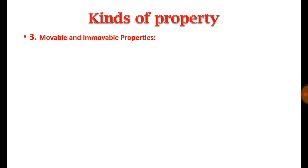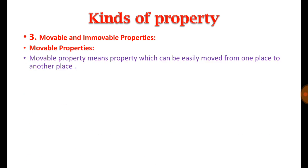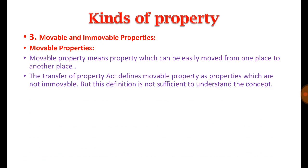The third kind of property is movable and immovable property. This classification is made on the basis of movability — whether we can easily move the property from one place to another. Movable property means the property which can be easily moved from one place to another. However, the Transfer of Property Act defines movable property differently, providing that properties which are not immovable are called movable property.